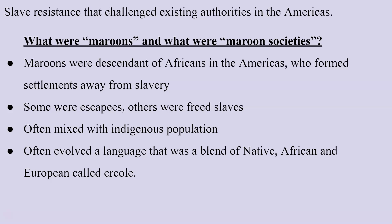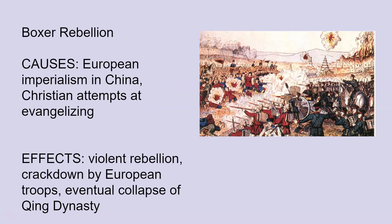In the Americas, not just in the United States, there was a growing climate of slave resistance. In many cases, societies grew up of freed and escaped slaves. The most famous of these are the Maroon societies — descendants of Africans in the Americas who formed settlements away from slavery. Some were escapees, many were freed slaves; they often mixed with indigenous populations and developed their own languages and a syncretism of religion. These languages are often referred to as creole languages.